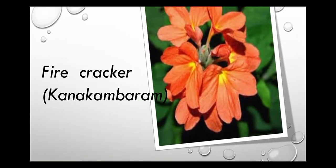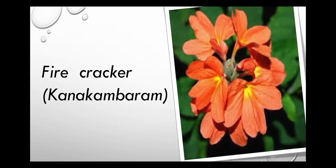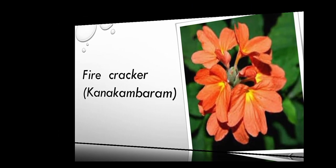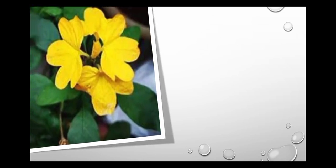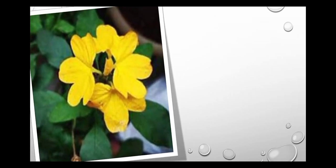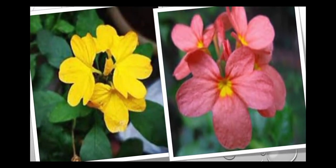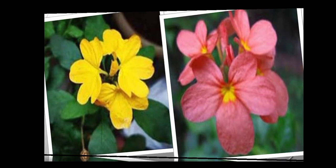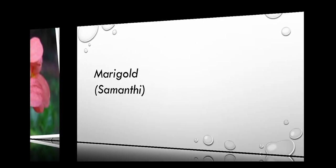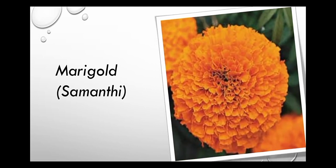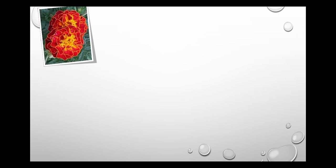Firecracker flower (Kanagambaram): It is noted for its attractive colour and blooms all year around. Marigold (Samandhi): It is yellow and orange in colour and grows in bushes.